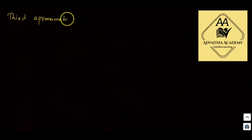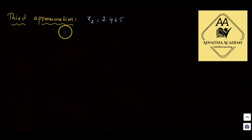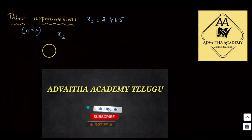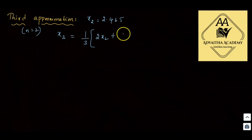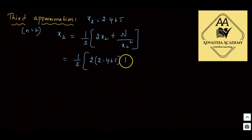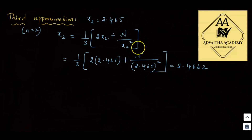For the third approximation, substitute n equals 2. x_3 equals (1/3) into (2 into x_2 plus 15 divided by x_2 squared). With x_2 equal to 2.465: x_3 equals (1/3) into (2 into 2.465 plus 15 divided by 2.465 squared). Calculating gives x_3 approximately equal to 2.4662.